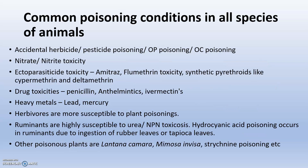Common poisoning conditions across all species include accidental herbicide or pesticide poisoning, organophosphate or organochlorine compounds, nitrite or nitrate toxicity, and ectoparasite toxicity. Amitraz is very common — when treating demodicosis with amitraz shampoos, animals may accidentally lick it, causing poisoning. Cypermethrin and deltamethrin are also common, as are drug toxicities such as penicillin and the helminthic drug ivermectin.